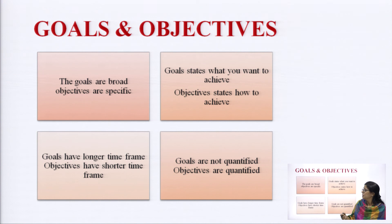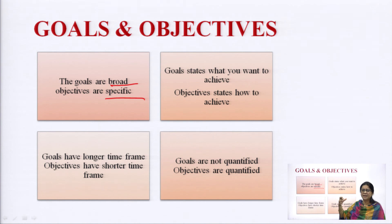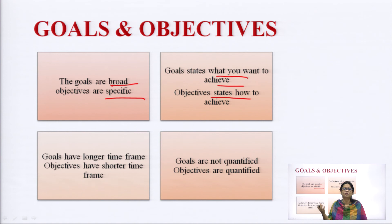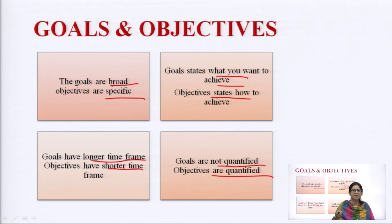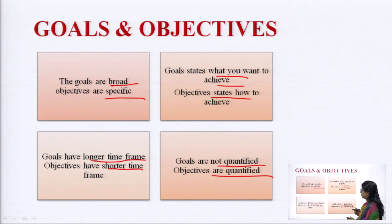There is a thin line difference between goals and objectives. Goals are broad and objectives are specific. Goals have a wider scope and objectives have a narrow scope. Goals state what you want to achieve; objectives tell you how you are going to achieve your goal. Goals have a longer time frame; objectives have a shorter time frame. Goals are not quantified, whereas objectives are quantified — for example, 'I have to produce 1000 units' is an objective because it is quantified.